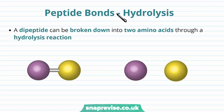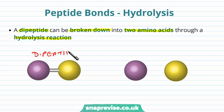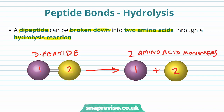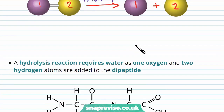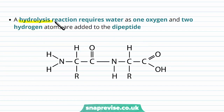It's important to also understand how peptide bonds are broken down. A dipeptide can be broken down into the two amino acids that formed it through a hydrolysis reaction — the opposite of condensation. Because it's the opposite of condensation, a hydrolysis reaction requires water, as one oxygen and two hydrogen atoms need to be added to the dipeptide to reform each amino acid.